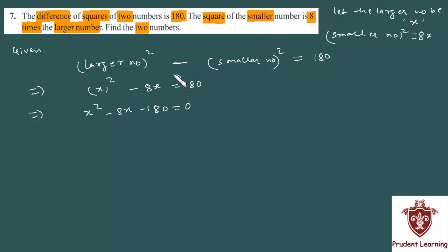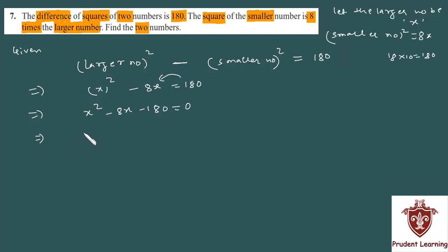Now we need to factorize and solve easily. Notice that 18 times 10 equals 180, and 18 minus 10 equals 8. So we split the middle term: x squared minus 18x plus 10x minus 180 equals 0.